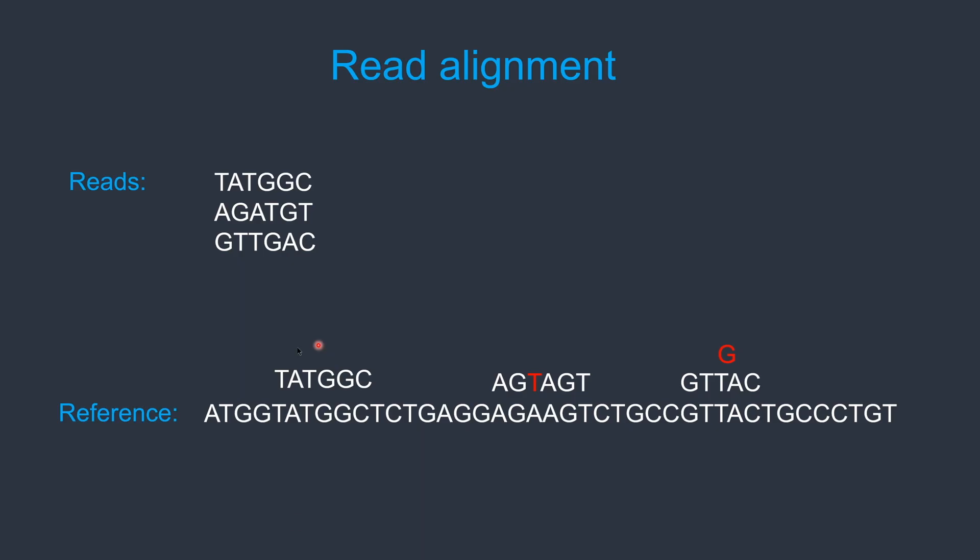To align millions of reads into the reference genome, the alignment algorithm uses strategies that speed up the alignment process. For example, BWA uses an indexing approach that allows BWA to find substring matches quickly, which speeds up the alignment process.